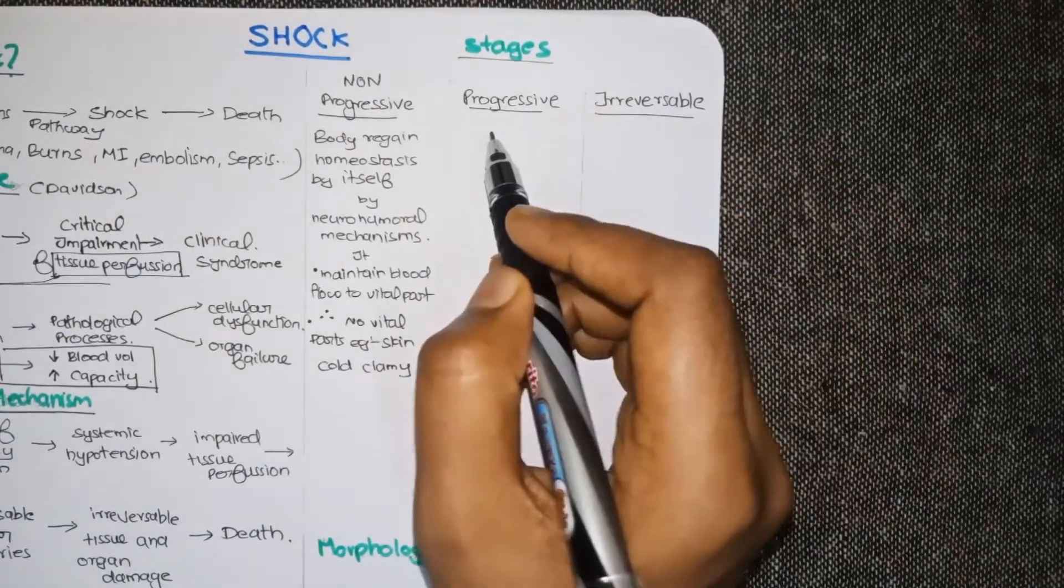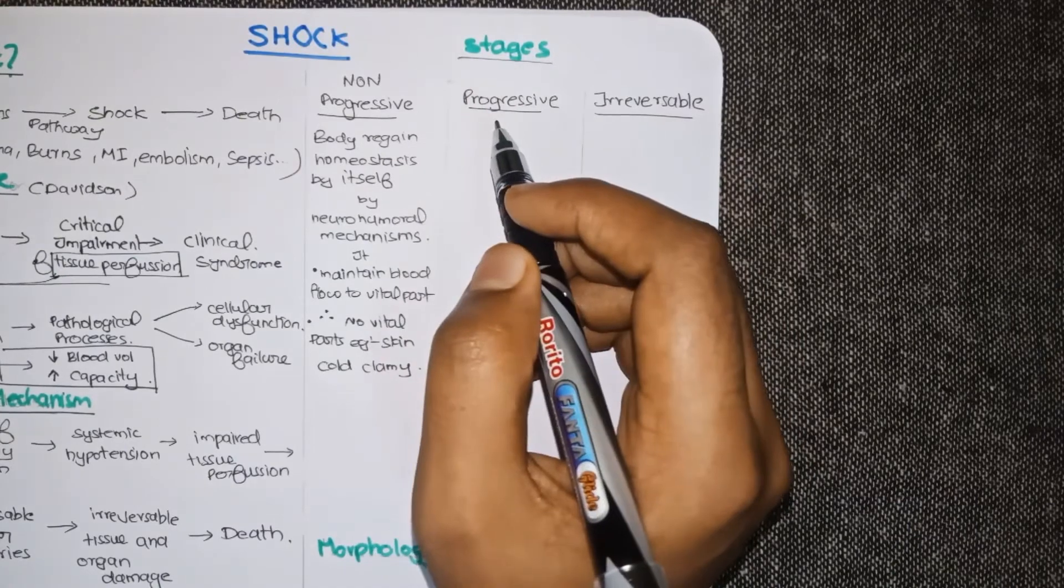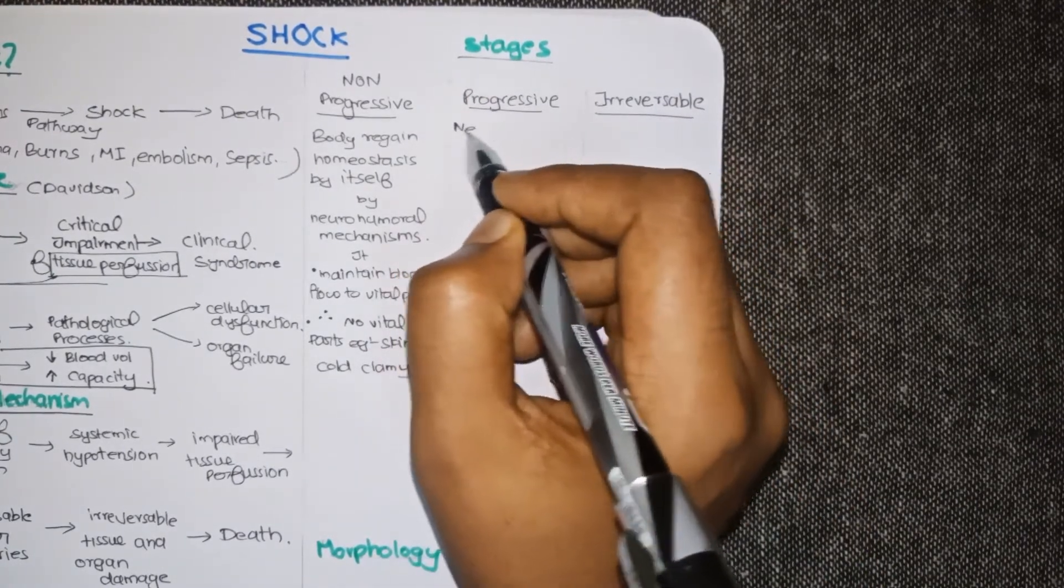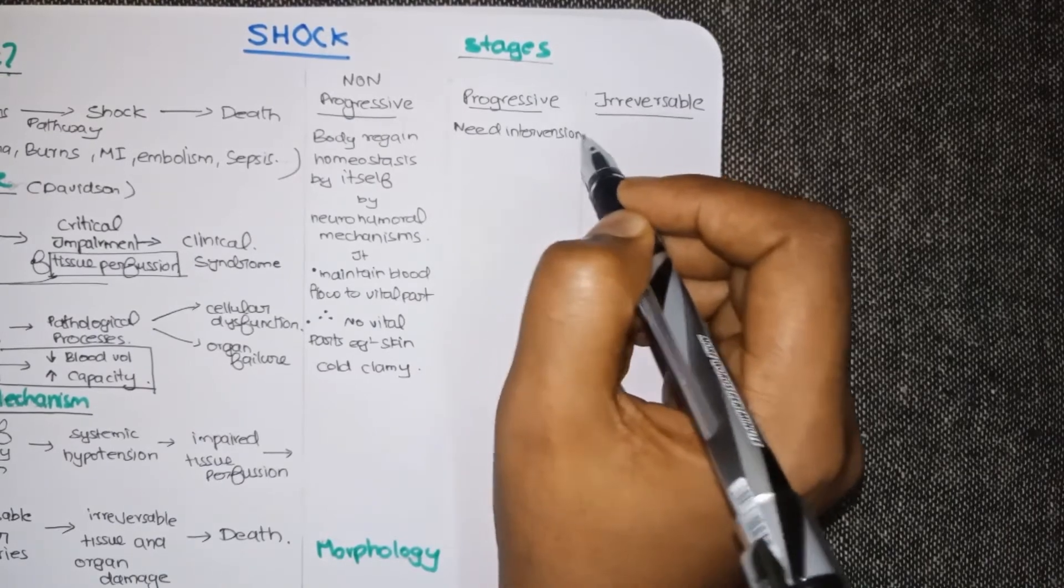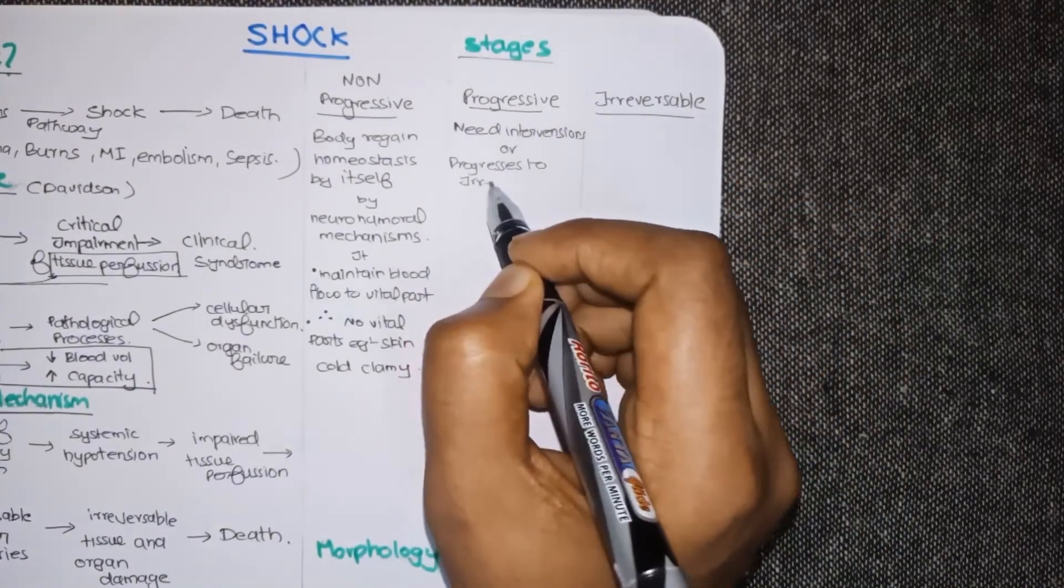The next stage is progressive. Here an external intervention like giving fluid is required, or the shock can progress into the irreversible stage.